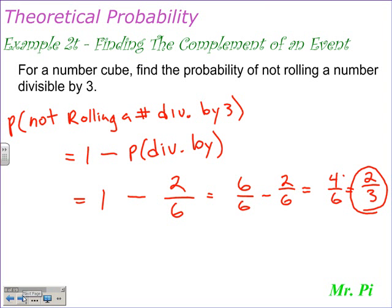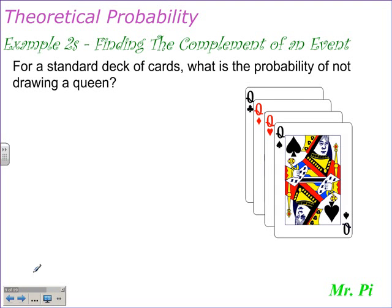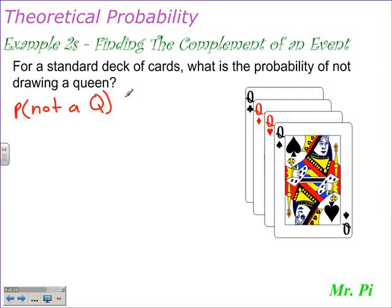Here's another example of the complement of an event. Example 2S: for a standard deck of cards, what is the probability of not drawing a queen? So let's write that out — the probability of not a queen. I'll just use a capital Q for the queen. There are 52 cards in the deck, so using the complement, the probability of not a queen is going to be equal to 1 minus the probability of drawing a queen.